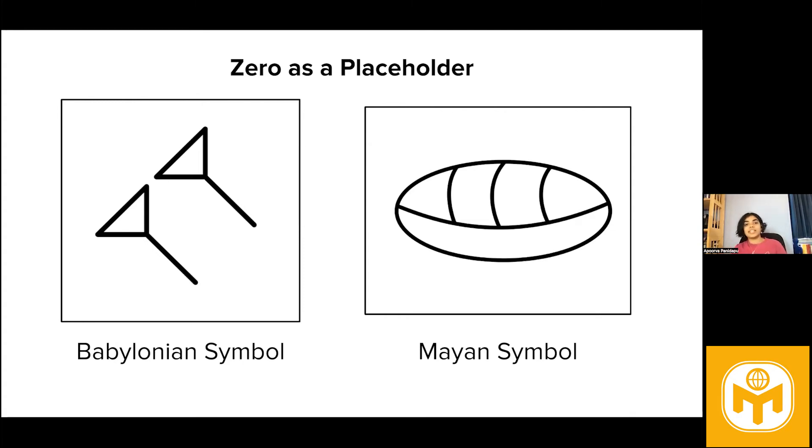So naturally this idea found its way into the Babylonian empire around 4,000 years ago and they were the first to really use a symbol instead of a space to indicate this absence, which you can see here on the left.